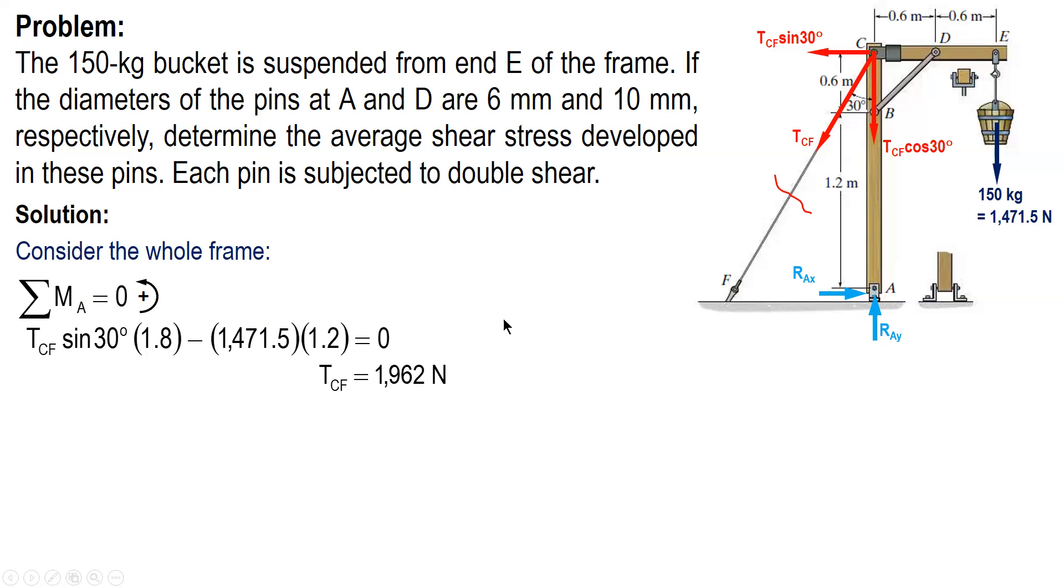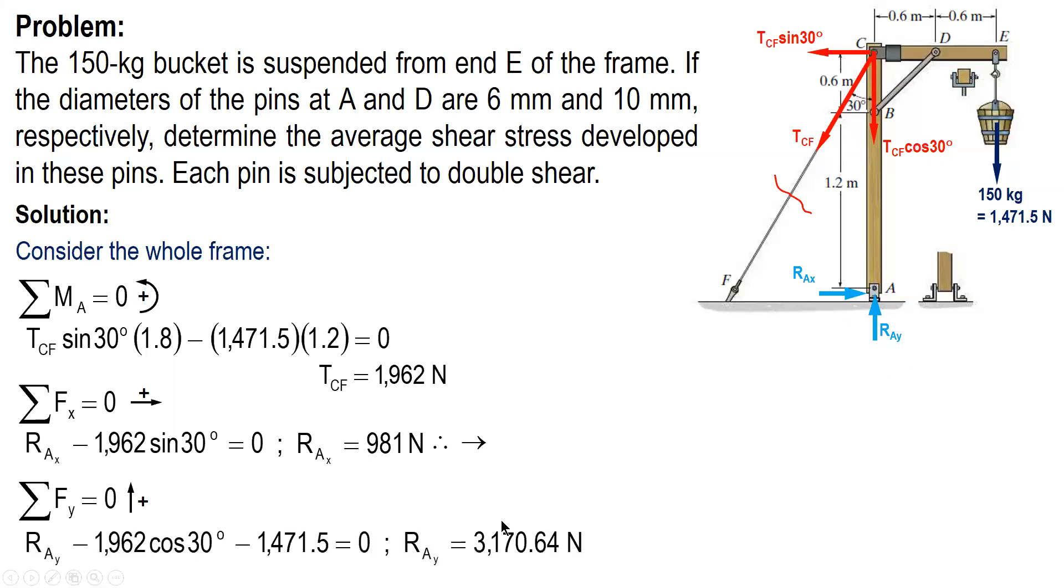So after this, we now solve for the components of the reaction at A. So summation of force horizontal, we only have two: this force and then this force. So we have R-A-X equal to 981 newtons, positive, so directed to the right. And summation of force vertical, we have three forces: this one, this, and then this one. Positive, therefore upward.